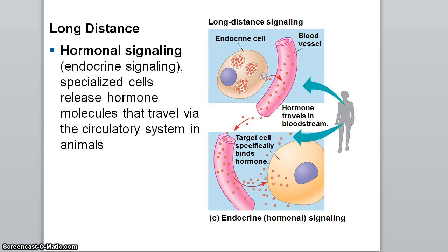Cells can also communicate long distances, particularly seen in the endocrine system. Hormones are specialized communication molecules that travel long distances through the circulatory system in animals. For example, cells inside the pancreas produce insulin, which is released into the bloodstream when vesicles fuse with the cell membrane. Insulin travels through the bloodstream to target tissue — like muscle cells or liver cells — telling those cells to absorb excess glucose and store it as glycogen.